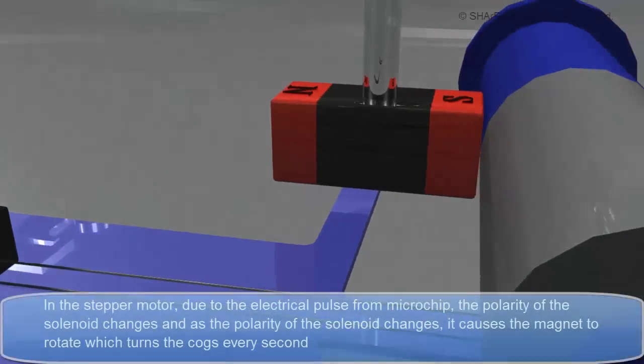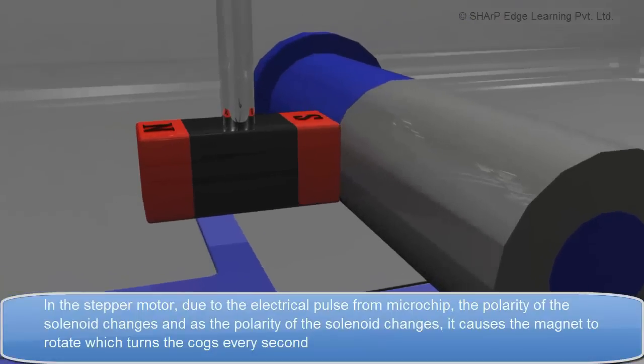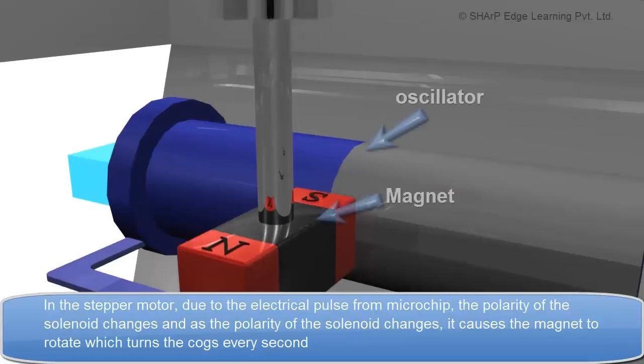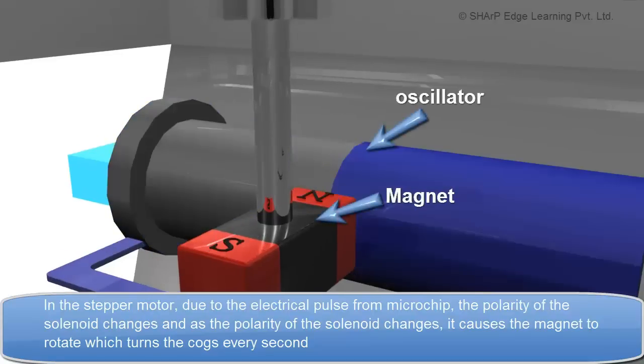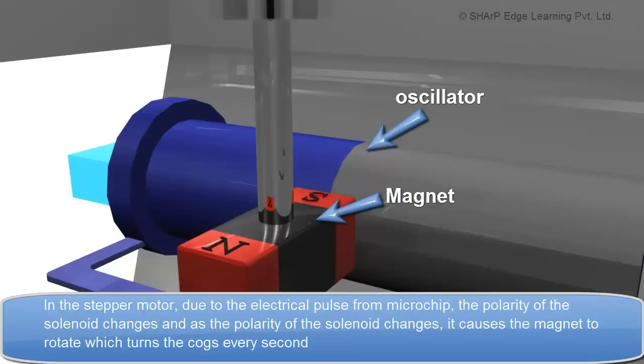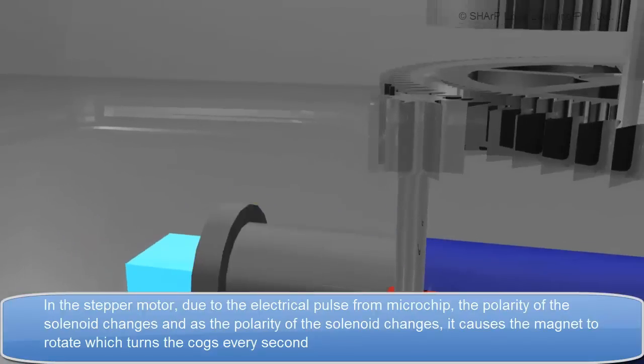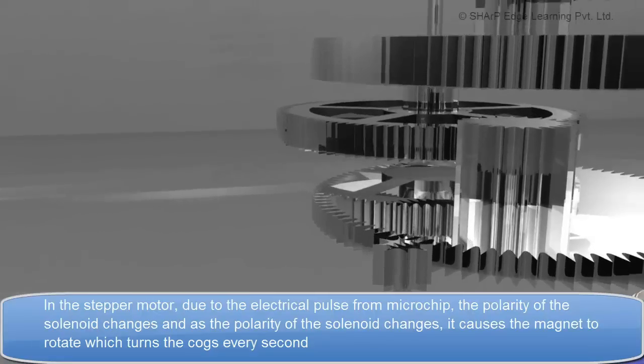In the stepper motor, due to the electrical pulse from microchip, the polarity of the solenoid changes. And as the polarity of the solenoid changes, it causes the magnet to rotate, which turns the cogs every second.